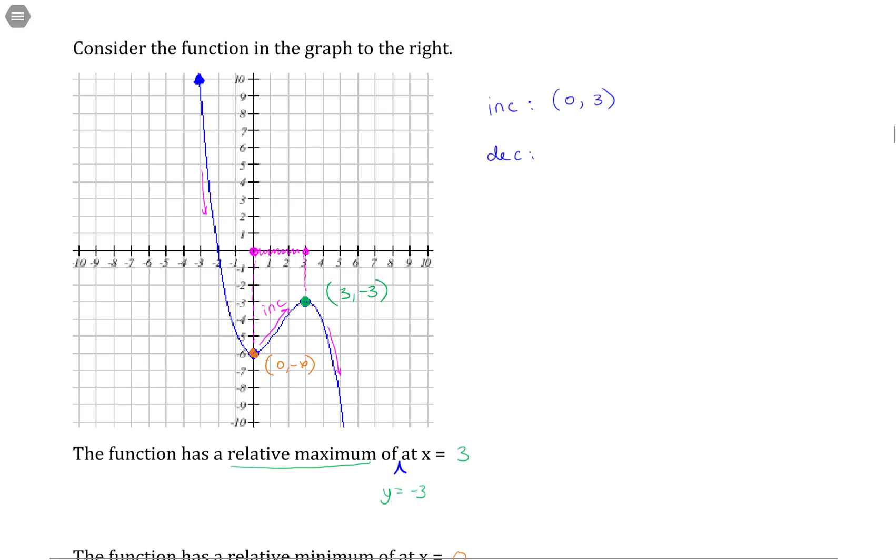So that means that I am decreasing all the way from negative infinity up to this particular point where it stops decreasing. So from negative infinity to 0, and then it starts decreasing again from this point, which has an x value of 3, off to positive infinity, because it continues in this pattern forever. So then from 3 to positive infinity.